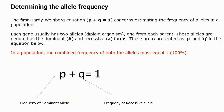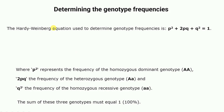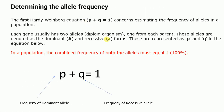Now, how do we determine allele frequency? The first Hardy-Weinberg equation is p plus q equals one. This equation is used to determine the frequency of alleles in a population. Each gene has two alleles — for diploid organisms like humans, one from the mother and one from the father. The dominant allele is denoted as capital A and the recessive as small a, represented as p and q respectively. The combined frequency of both alleles must always equal one or 100 percent.